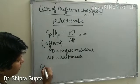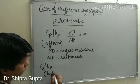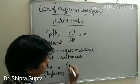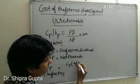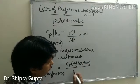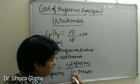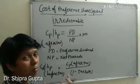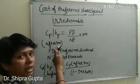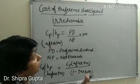Then we calculate Kp before tax. It is calculated by Kp after tax divided by 1 minus tax rate. If we calculate before tax to after tax, we multiply by 1 minus tax rate. And if we first calculate after tax and want before tax, we divide by 1 minus tax rate.